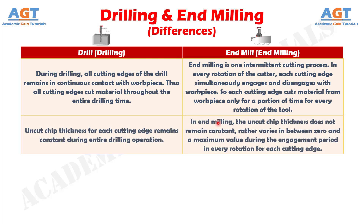Number eleven: uncut chip thickness for each cutting edge remains constant during the entire drilling operation, whereas in end milling the uncut chip thickness does not remain constant; rather it varies between zero and a maximum value during the engagement period in every rotation for each cutting edge.